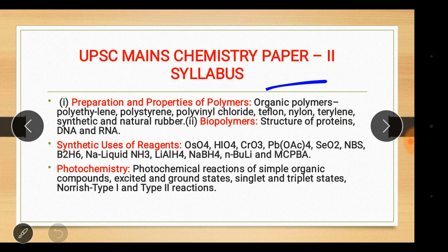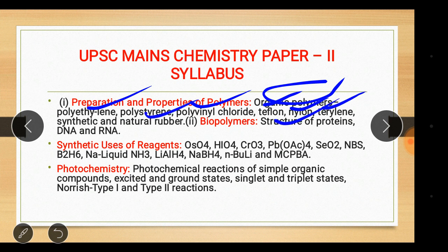Preparation and properties of polymers: organic polymers — polyethylene, polystyrene, polyvinylchloride, Teflon, nylon, Terylene, synthetic and natural rubber. Biopolymers: structure of proteins, DNA and RNA.